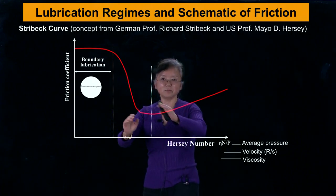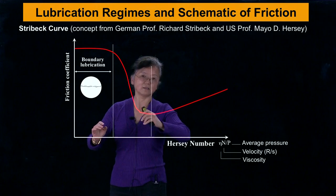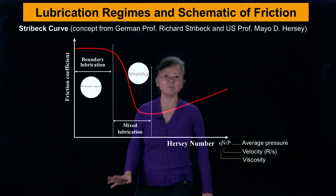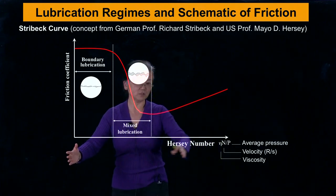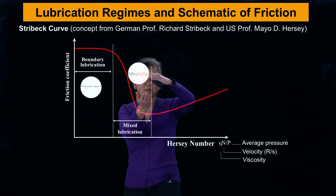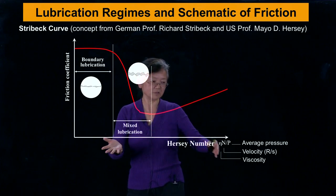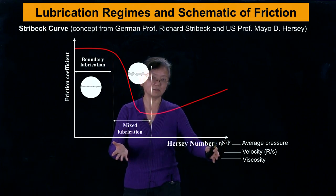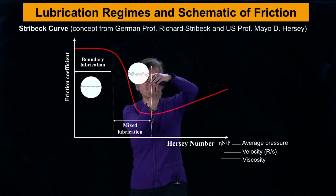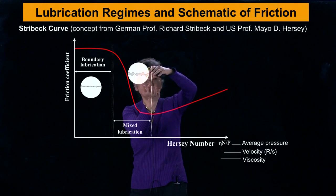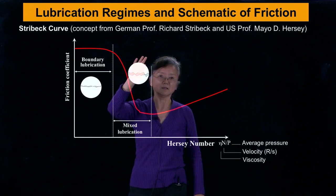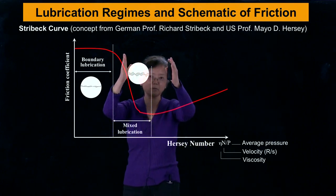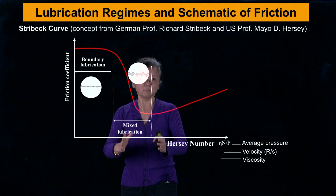The second regime shows friction reduction, and we call this mixed lubrication. As we allow speed to increase, the two surfaces begin to lift because we have enough hydrodynamic action, creating a gap in between — but the surfaces are still not completely separated. We still see asperity contact occurring somewhere, which is why we call this regime mixed lubrication.